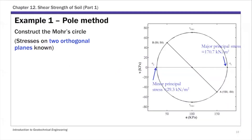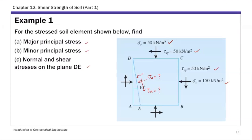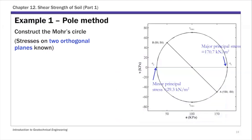To use this graphical method, the first step is to construct the Mohr circle. For this example, we have two orthogonal planes — plane dC and plane cB — and we know their stresses. We know the normal and shear stresses on these two orthogonal planes, so we can use these two data points to construct the Mohr circle. These two points represent the stresses on those two orthogonal planes.